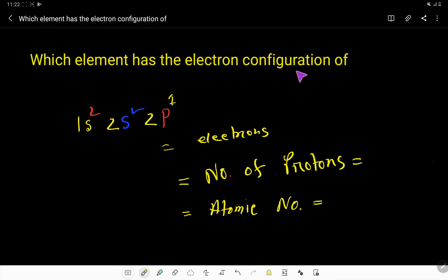Which element has the electron configuration of 1s² 2s² and 2p¹? To find out the name of this element, at first we have to count the number of electrons here. So in 1s² we are getting two electrons, then in 2s² we are getting also two, and in 2p¹ we are getting one electron.